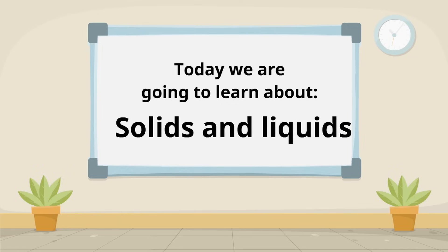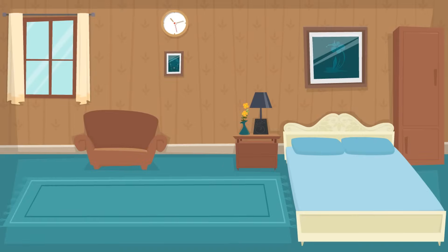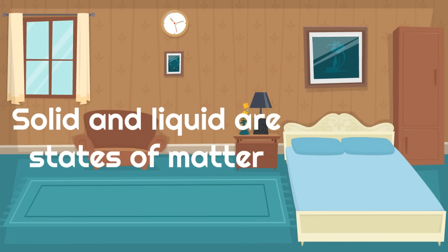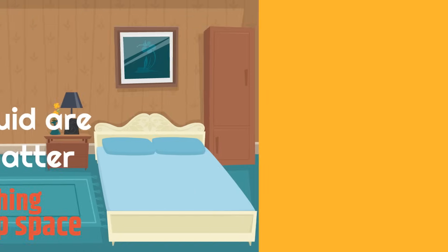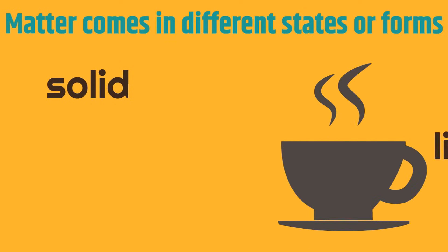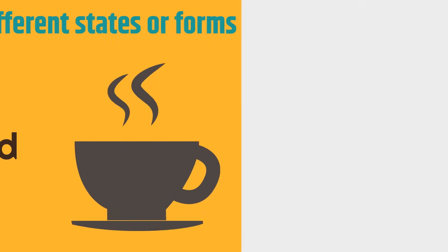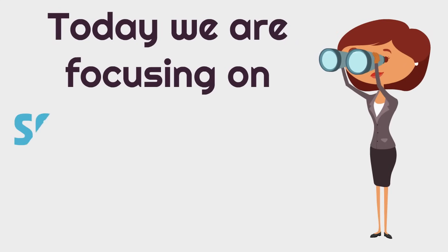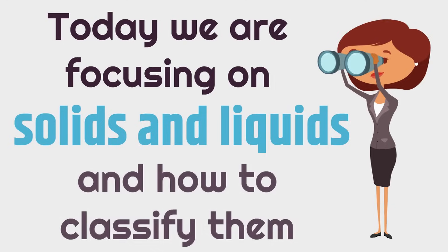Today, we are going to learn about solids and liquids. Solid and liquid are states of matter. Matter is anything that takes up space. Matter comes in different states or forms — there's solid, there's liquid, and there's gas. Today, we are focusing on solids and liquids and how to classify them.